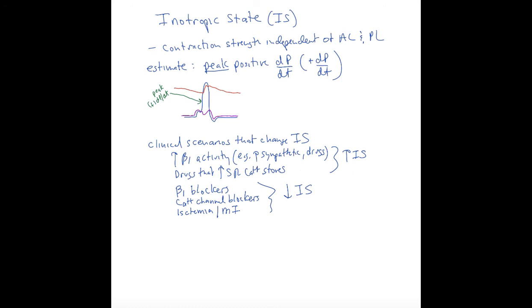The clinical scenarios that change inotropic state would be things that affect the sympathetic activation of beta-1 receptors, either turning on sympathetic system directly or drugs. You can have drugs that increase sarcoplasmic reticulum stores of calcium, which also can increase inotropic state.